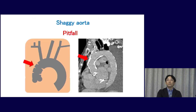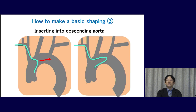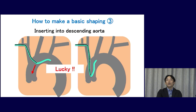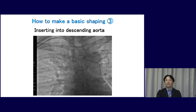There are some pitfalls of these methods. In cases with the shaggy aorta, the previous two techniques may carry a high risk of thromboembolic complications, so I recommend other technical options. The third method is inserting the head of the Simon's catheter directly into the descending aorta. It is often useful to fix the tip of the guide wire at the corner of the Simon's catheter. If the tip of the catheter enters the descending aorta, we can make the basic shape without any effort — this is a very lucky and easy case.